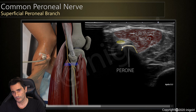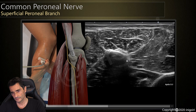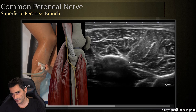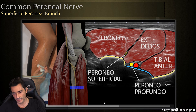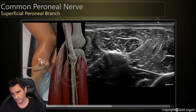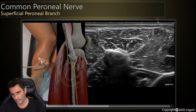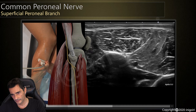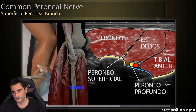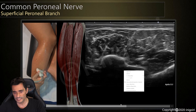Continuing to follow the common peroneal nerve — it is difficult to see at this level, so we use probe movements to better visualize it. Here we can identify the deep peroneal nerve and also the superficial peroneal nerve. The orientation of the nerve and its small size make visualization challenging, but you can see something moving here.